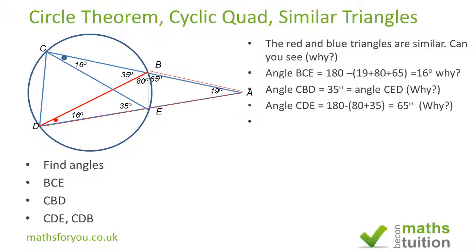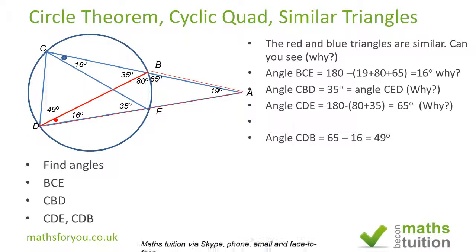To find angle CDB, we do 65 minus 16, which gives us 49 degrees. You can go back and check: this chord subtends an angle of 49 degrees here, and the same chord subtends 49 degrees there. This chord subtends 80 degrees there. If we add 19, 16, 35, and 49, we should get the right result.